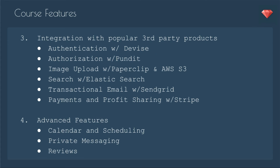Number three, integration with popular third-party products. We have authentication with Devise. We'll be going over authorization with Pundit. We're going to upload images with Paperclip and AWS S3. We'll be tackling search with Elasticsearch. We'll be handling transactional email with SendGrid. And payments and profit sharing with Stripe, which is a pretty advanced feature.